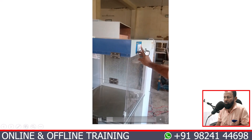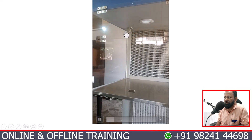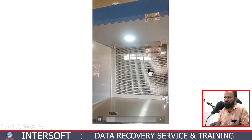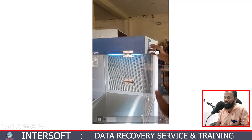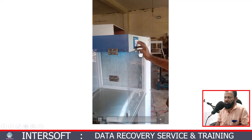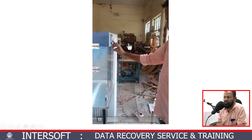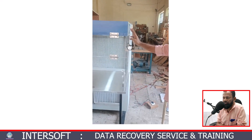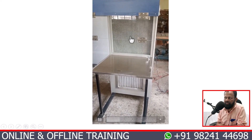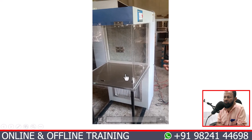There are three switches: one for UV light, one for lamp, and one for blower and air filter. This is a wooden unit, so controlling is done here. When we start the blower, it will start and the air will come from inside. This is the 2 by 2 size — the working space is 2 by 2.